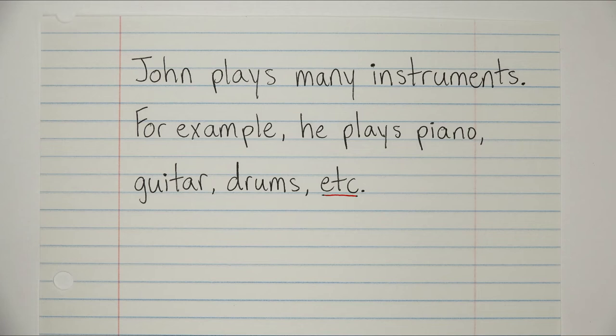When we say, for example, we're already showing that we're not going to be listing everything, right? We're just going to be giving a few examples. We're not going to be naming every single instrument. So since we have, for example, in the sentence already, we don't need to be saying etc.